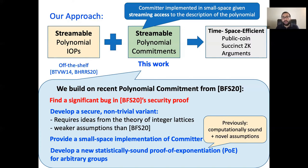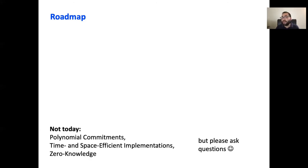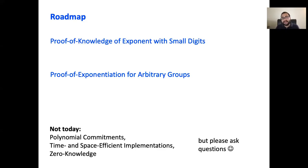We also develop a new proof of exponentiation protocol that is essential in getting the polylogarithmic verifier for our argument scheme. Our proof of exponentiation protocol is statistically sound and works for arbitrary groups, whereas previous work only achieved computational soundness under novel cryptographic assumptions for arbitrary groups. Going back to the transformation, we take our streamable polynomial commitment, combine them in a natural way with streamable polynomial IOPs from the literature, and get time and space efficient public coin zero-knowledge arguments. Although space optimality is the killer consequence of our work and most relevant to practice, we won't be talking about polynomial commitments, time and space efficient implementation, and zero-knowledge in the rest of the talk. Rather, Alex will discuss two sub-protocols: first, a proof of knowledge of exponent with small digits, which will highlight the bug in the Bunz et al. paper and how we fix it; and second, a proof of exponentiation protocol that leverages ideas from the proof of knowledge protocol.